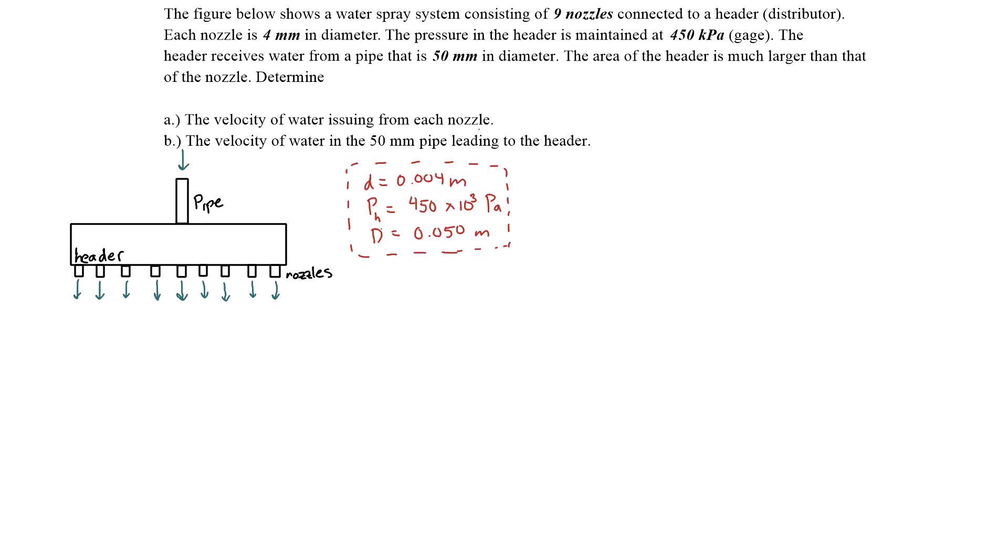This problem is actually pretty straightforward although there is one slight assumption that you have to take account for when doing this problem. The major hint when it comes to dealing with that assumption is that it states that the area of the header is much larger than that of the nozzle. You'll see how that plays a role when we determine the velocity of the water issuing from each nozzle.